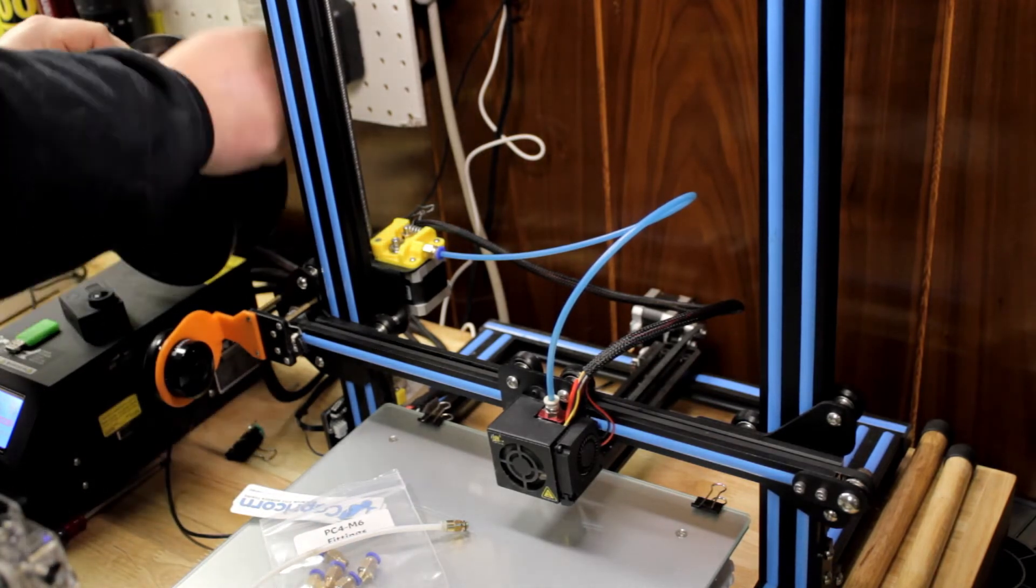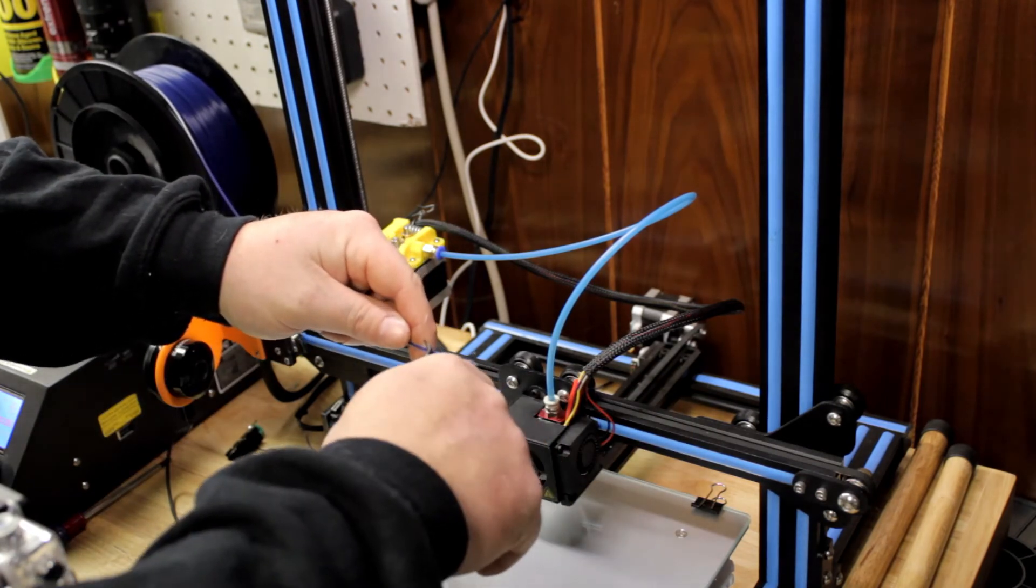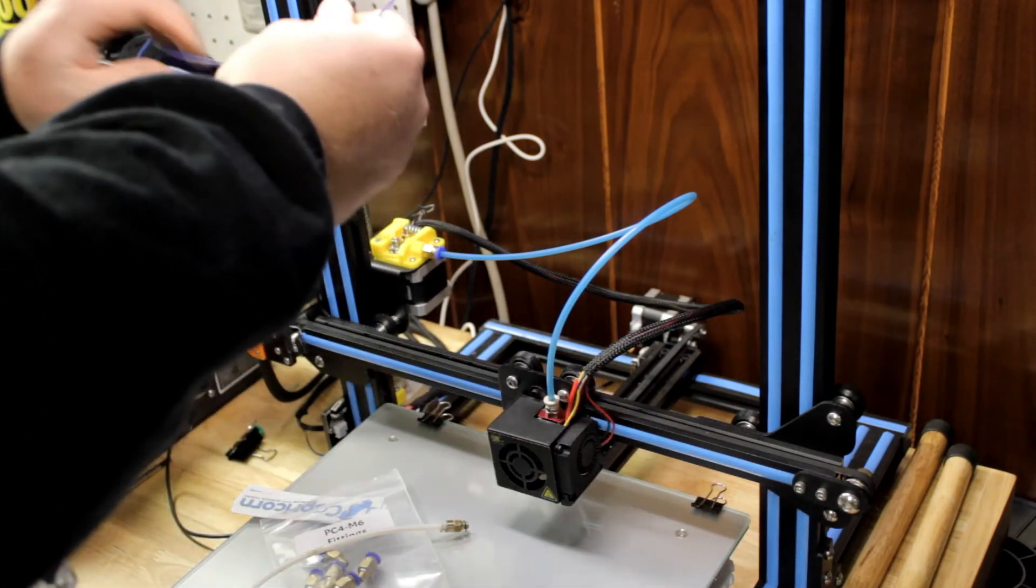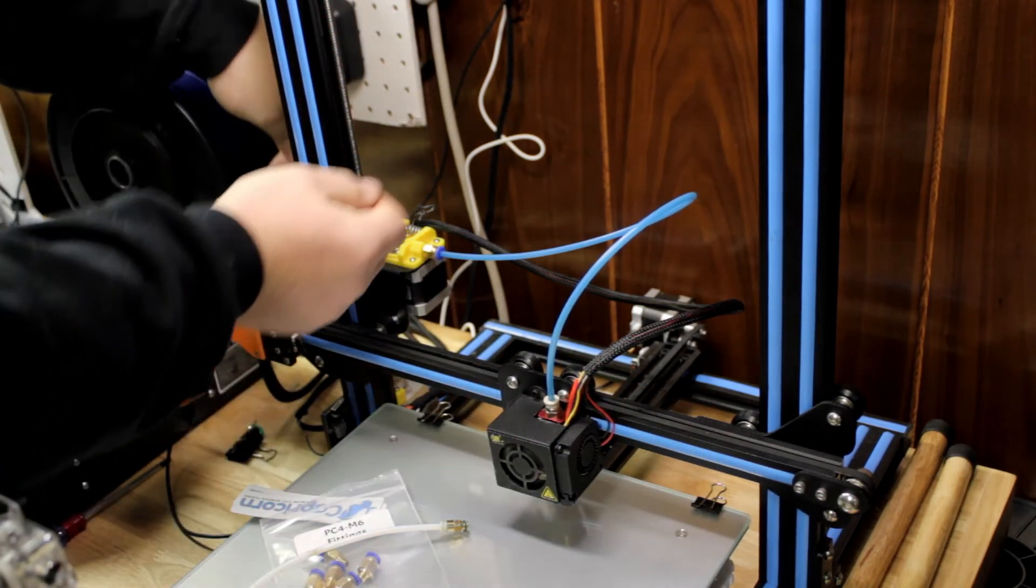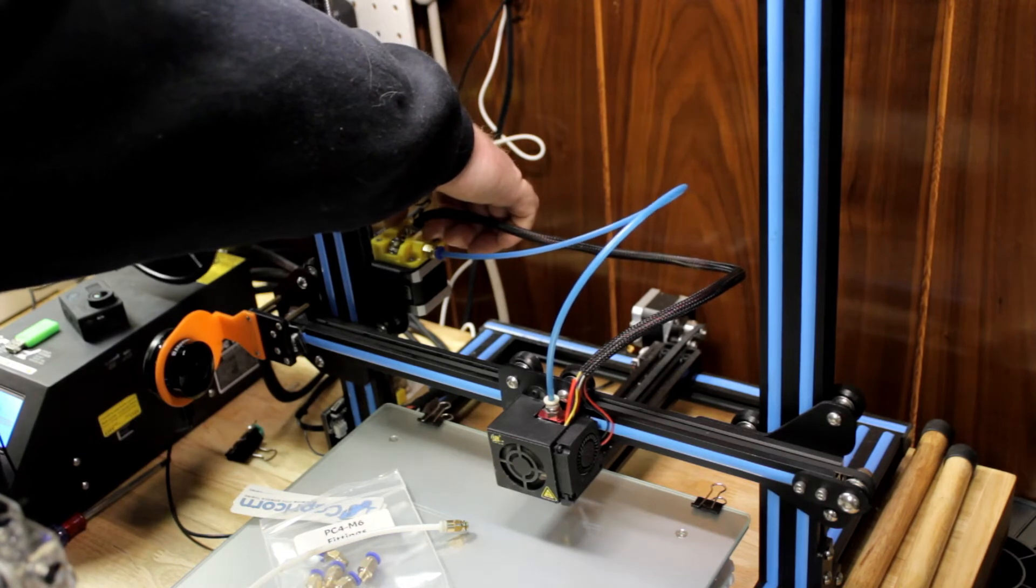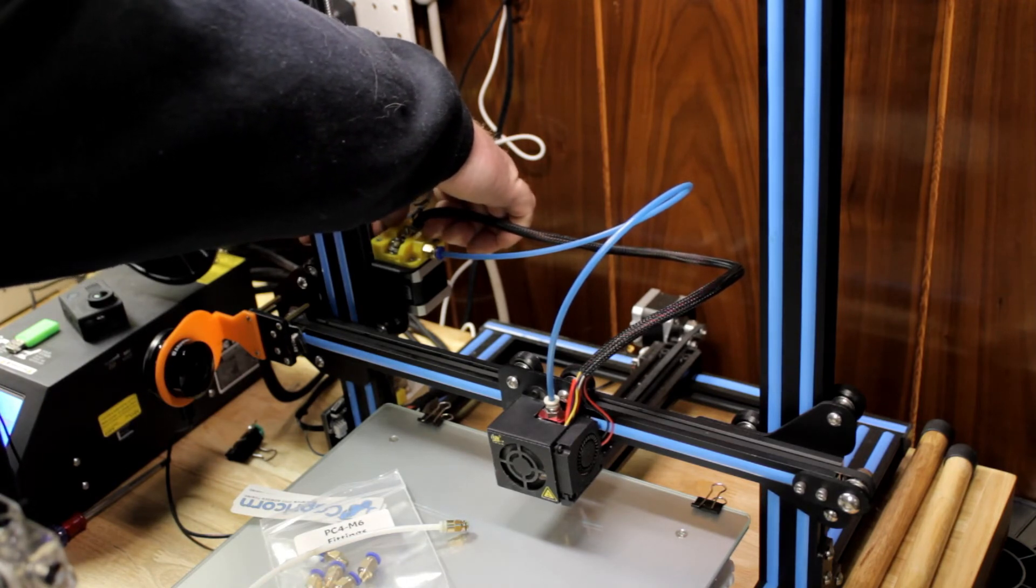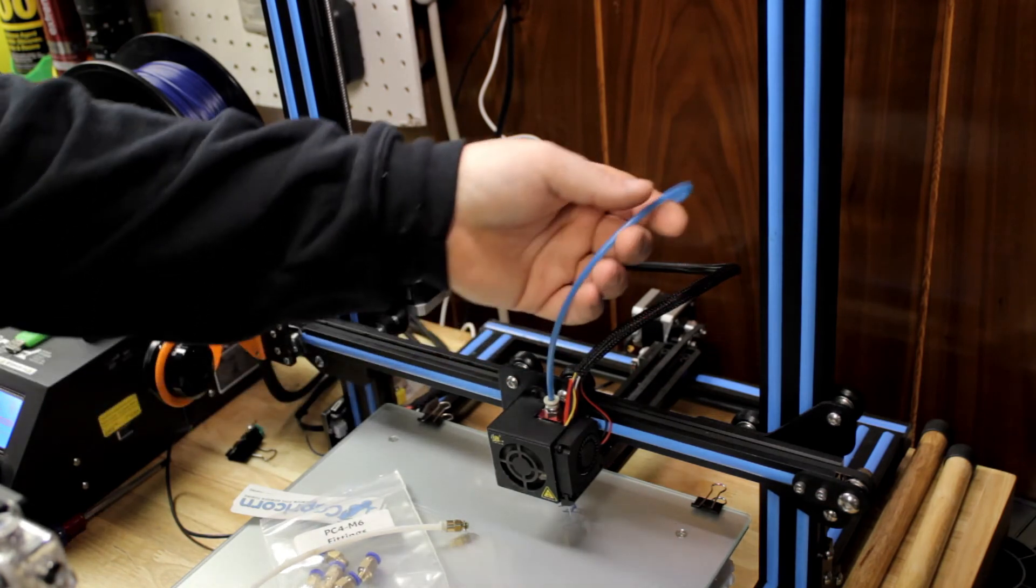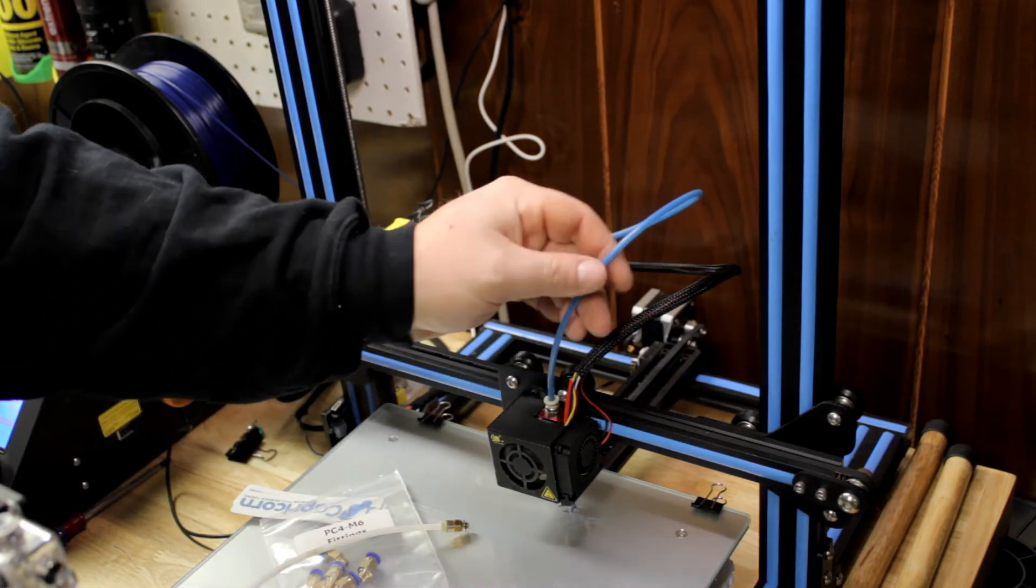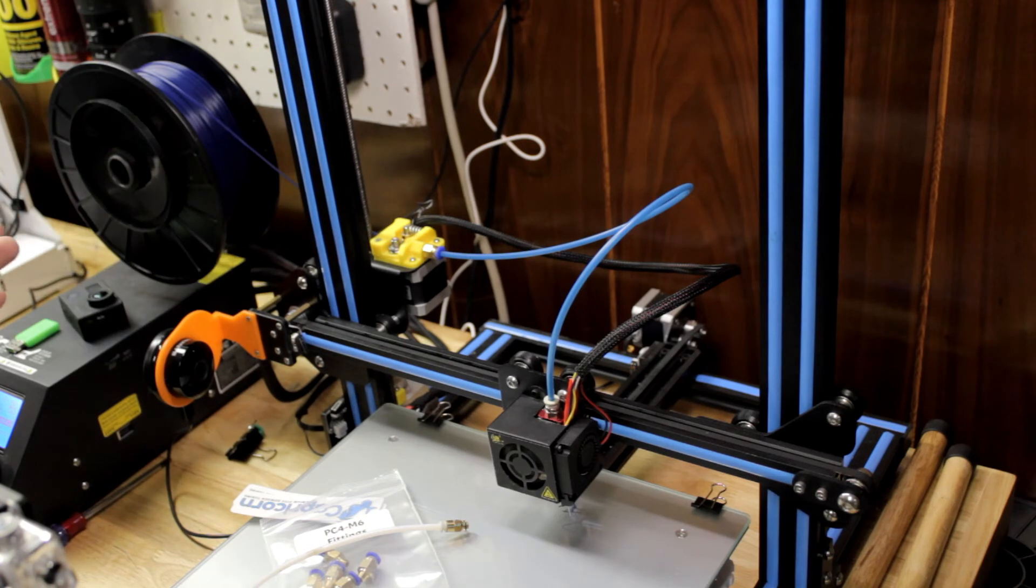And then we should be able to thread the filament back in. I always cut a 45 degree angle on the filament. Try and spread it out, like try and straighten it out a bit. I'm going to thread it in here. She fits in like a glove. I think plus we're color matching. So I mean, we're color matching, right? Right. That's the thing to do.